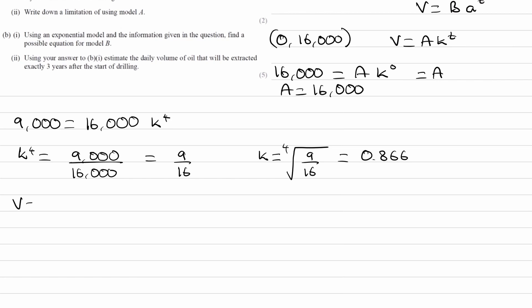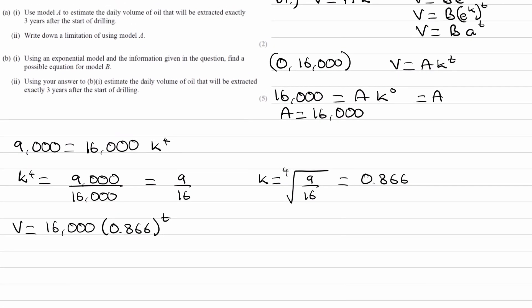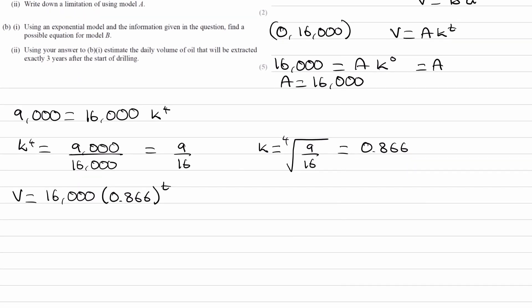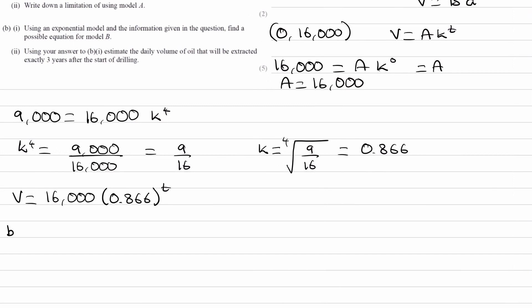Our question was to work out an equation, so we can put it all together. The volume is equal to a times k to the power of t, which is V equals 16,000 times 0.866 to the power of t. Now for part two, using your answer to B part one, estimate the daily volume of oil that will be extracted exactly three years after the start of drilling.